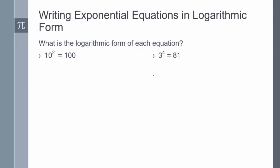Let's take a look at a few examples of converting exponential equations into logarithmic form. Our first one is 10 squared equals 100. To convert this, I'm going to follow the three-step process. The base of my exponent is the base of my log, what my exponential function is equal to is my log, and that is equal to the power of my exponent. So 10 squared equals 100 is written as log base 10 of 100, which is equal to 2.